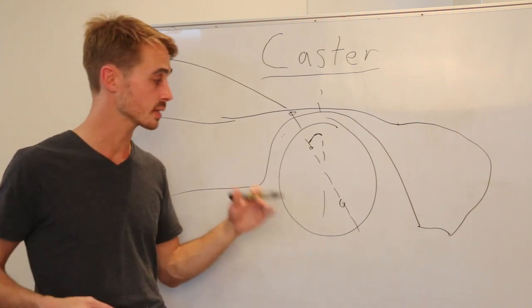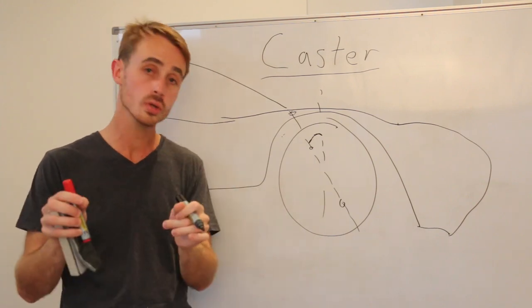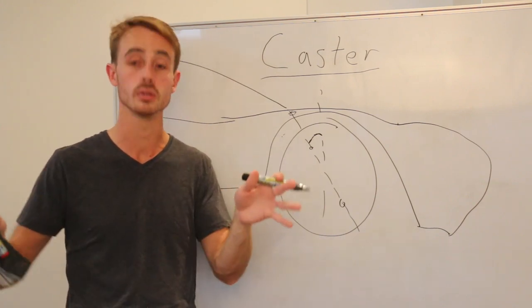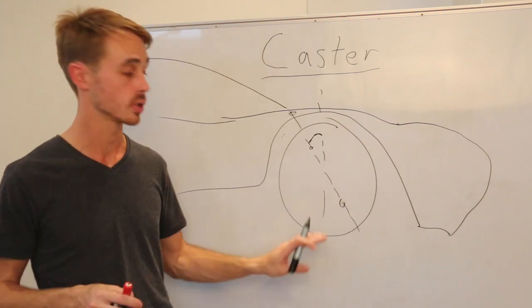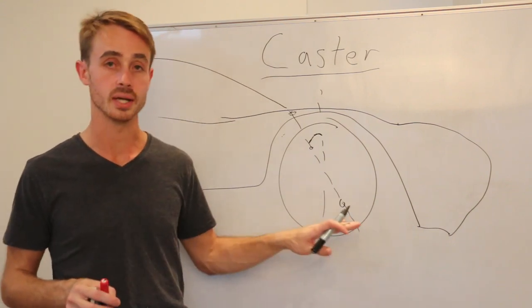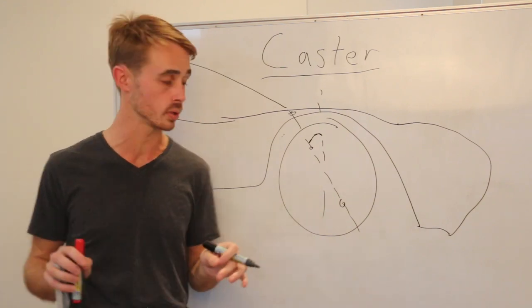By increasing the caster we can actually run less camber when the car is going in a straight line because once you turn it into a corner and apply some steering angle the camber will appear accordingly. This can be good for road cars when you don't want so much camber that you're getting wear properties in a straight line but you still want it to handle all right in corners.